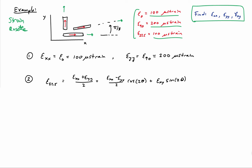We know the normal strain at 22.5 degrees, and we can write that in terms of the strains in the x and y directions using the double-angle version of the transformation laws. The expression includes the mean normal strain, the difference in normal strains divided by two, and the shear strain. We know the left-hand side, we know the normal strain values, and we know the angle. The only unknown is the shear strain, so we can use this relationship to solve for it.